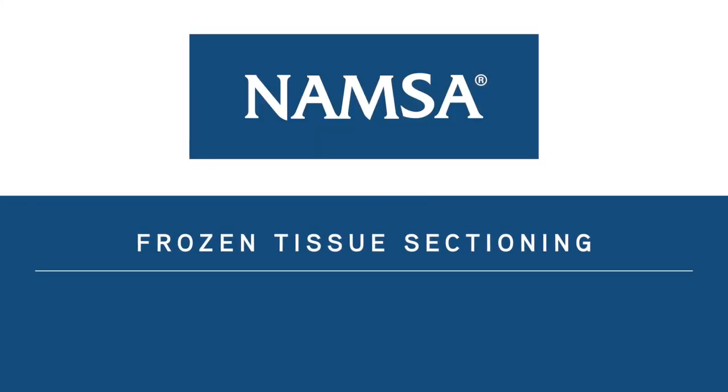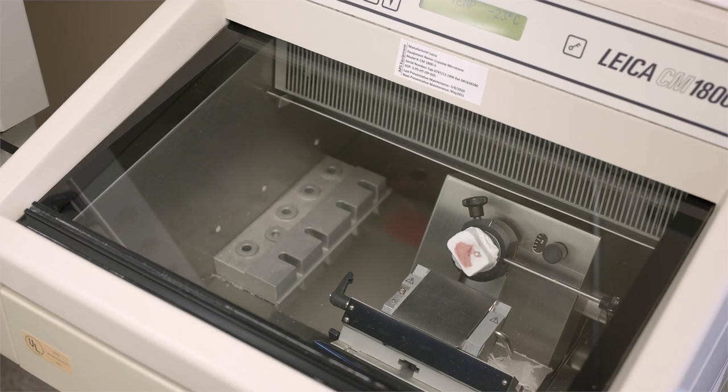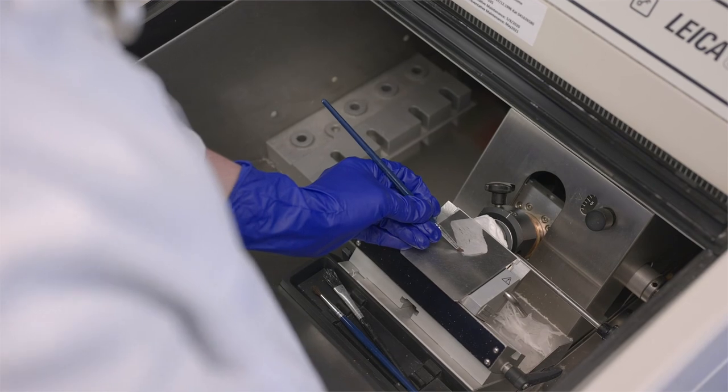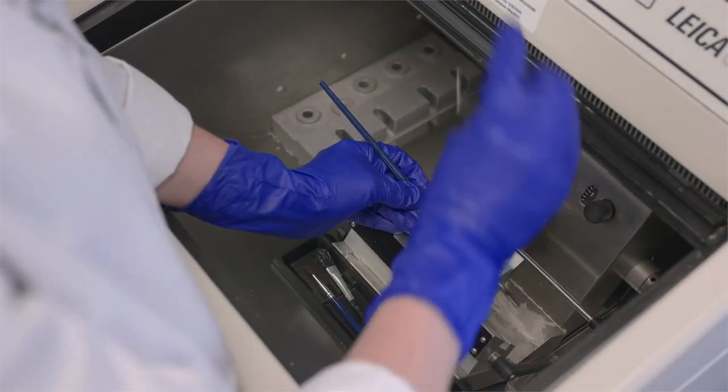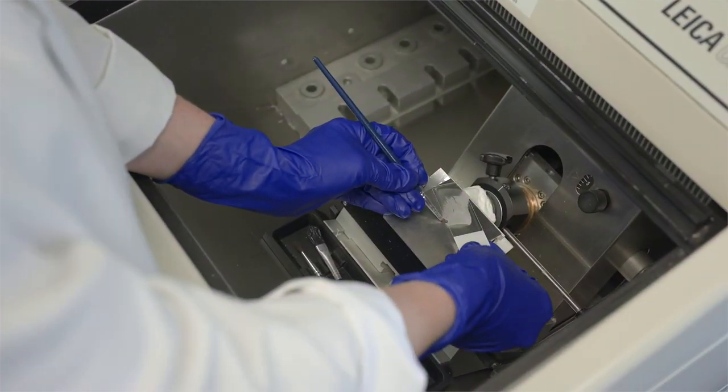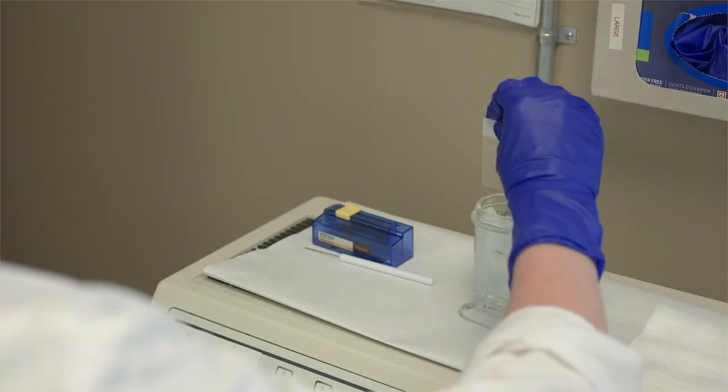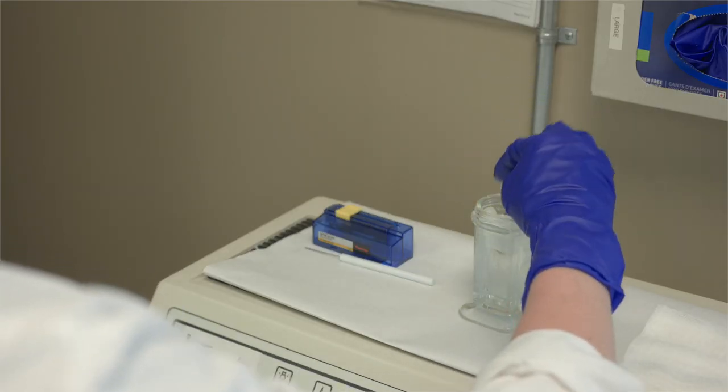Frozen tissue sectioning. If study samples cannot be exposed to formalin or other fixatives, tissue without devices can be frozen, cut on a cryostat, and stained with H&E. This is currently an infrequent process. Additional stains can be developed based off of client request.